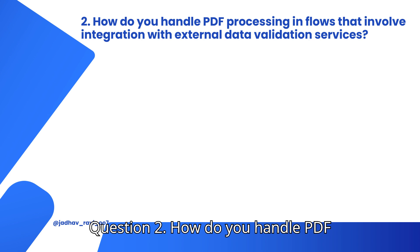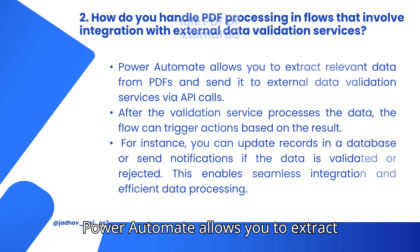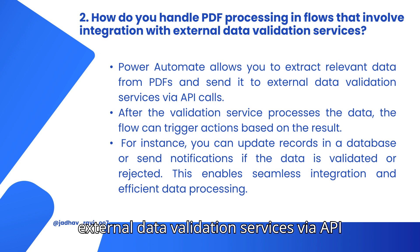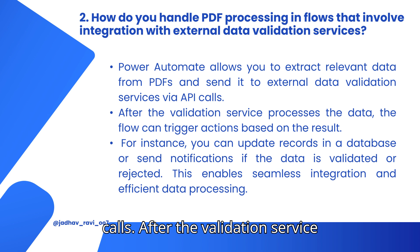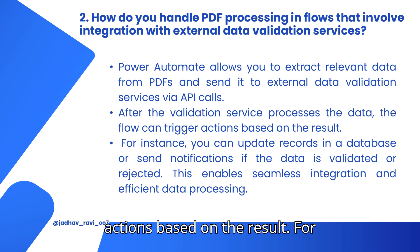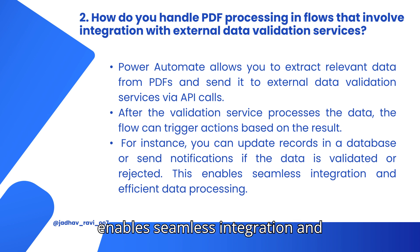Question 2: How do you handle PDF processing and flows that involve integration with external data validation services? Power Automate allows you to extract relevant data from PDFs and send it to external data validation services via API calls. After the validation service processes the data, the flow can trigger actions based on the result. For instance, you can update records in a database or send notifications if the data is validated or rejected. This enables seamless integration and efficient data processing.